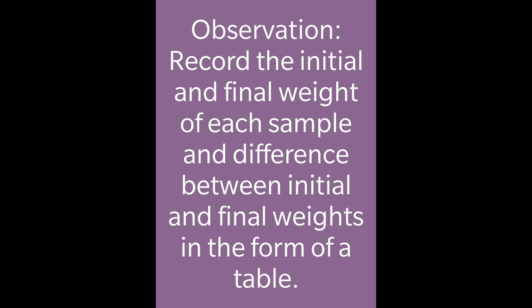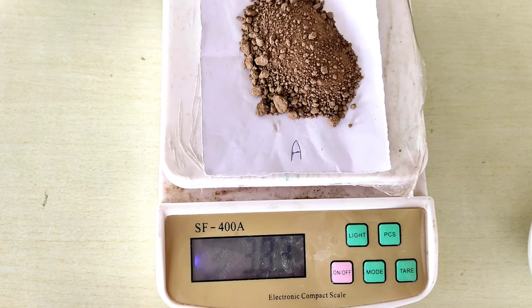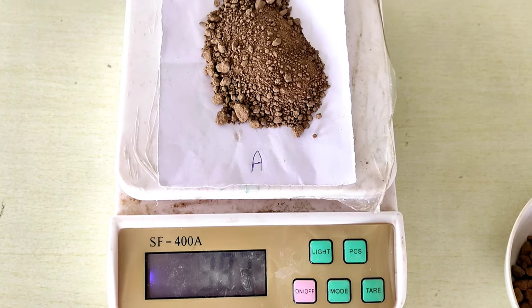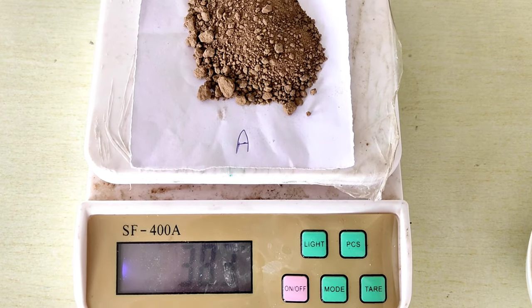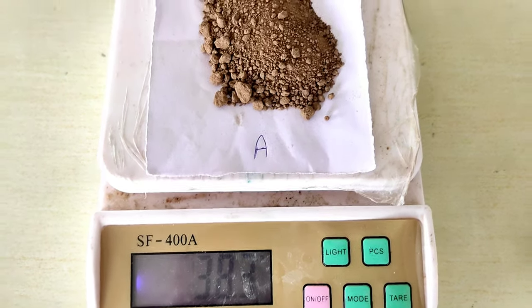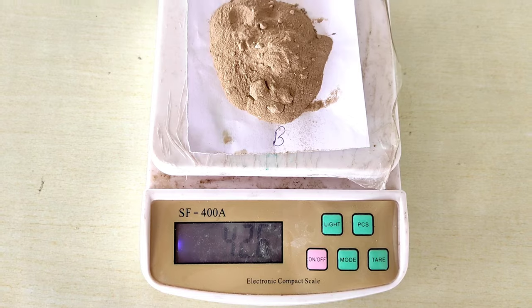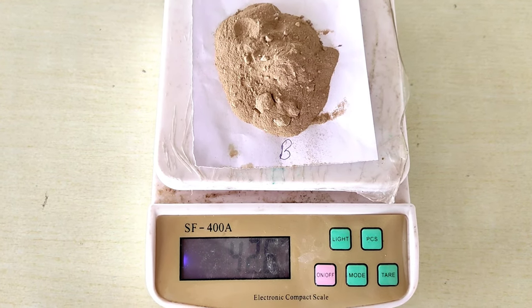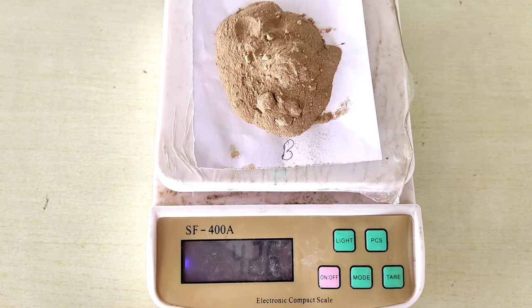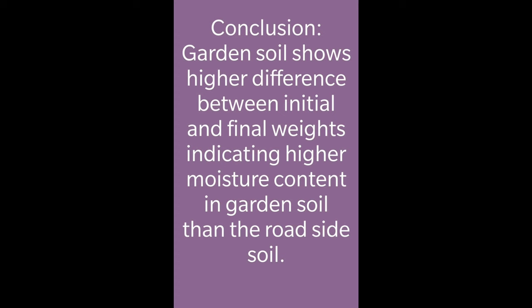After heating for some time, when we feel the samples are dry, we leave them to cool. After cooling, we take the final weight of these soil samples. Our initial weight was 50 grams. The final weight for sample A is 38.3 grams. We take the final weights of both soil samples, find the difference from the initial weight, and that gives us the moisture content. As you can see, garden soil shows a higher difference because it has higher moisture content than roadside soil.